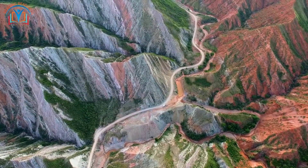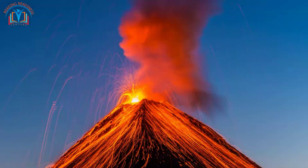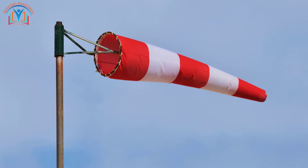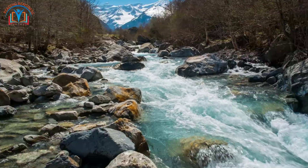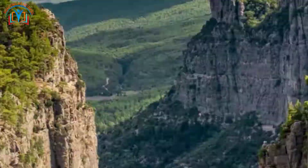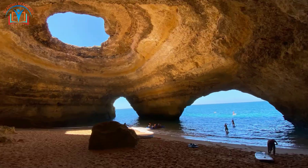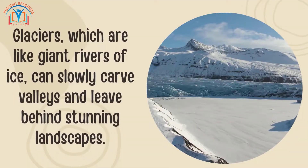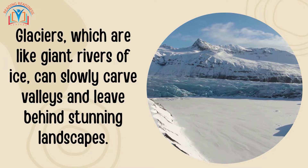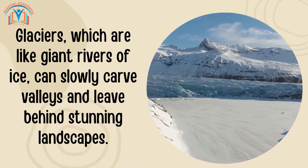The changes to Earth's crust aren't just about mountains, volcanoes, and earthquakes. Over time, wind, water, and ice can also shape the land, creating amazing features like canyons, caves, and beaches. Glaciers, which are like giant rivers of ice, can slowly carve valleys and leave behind stunning landscapes.